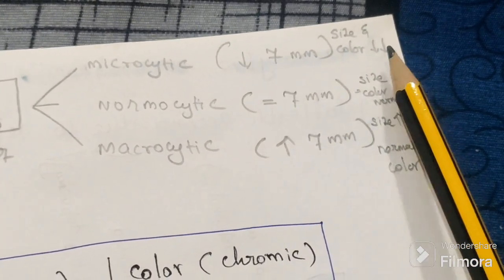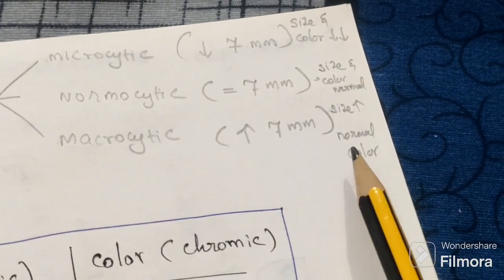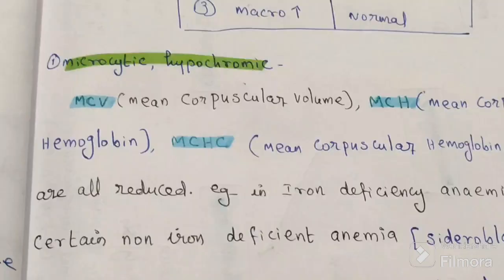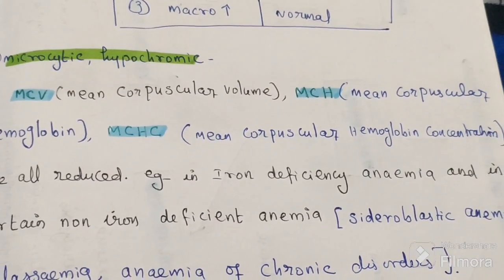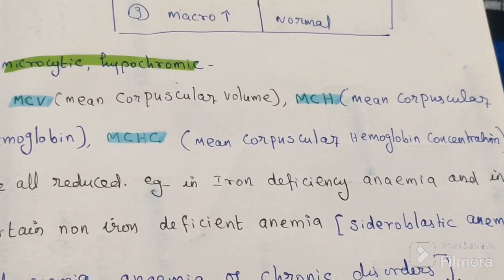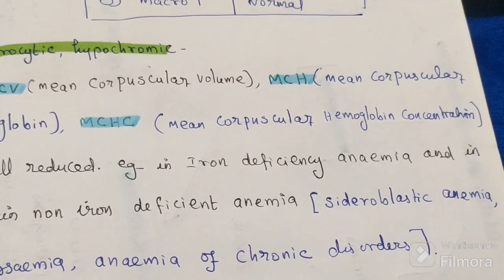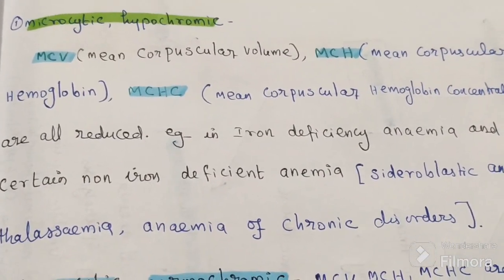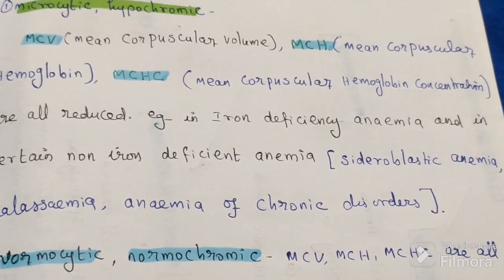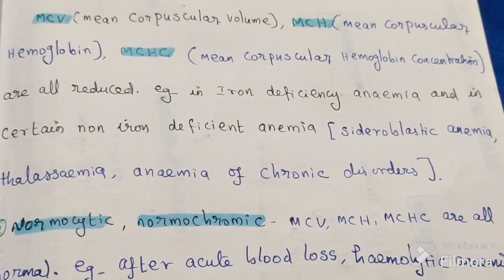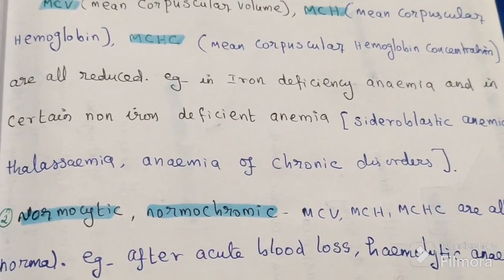In microcytic hypochromic anemia, size and color are both decreased. Mean corpuscular volume (MCV), mean corpuscular hemoglobin (MCH), and mean corpuscular hemoglobin concentration (MCHC) are all reduced. Examples of microcytic hypochromic anemia include iron deficiency anemia, sideroblastic anemia, thalassemia, and anemia of chronic disorders.